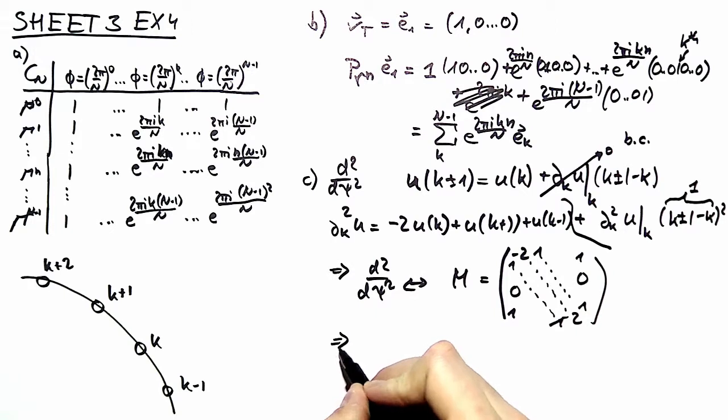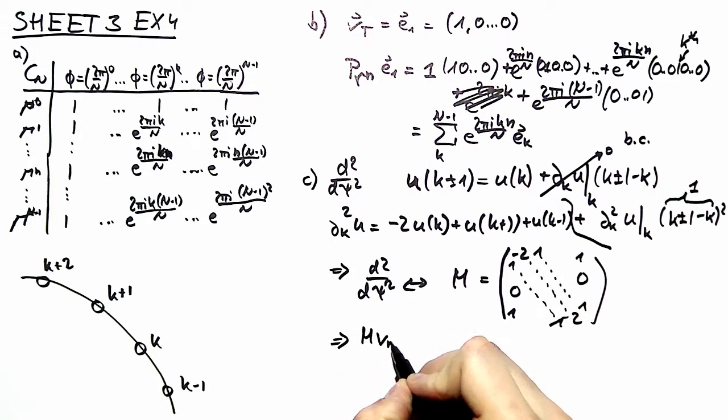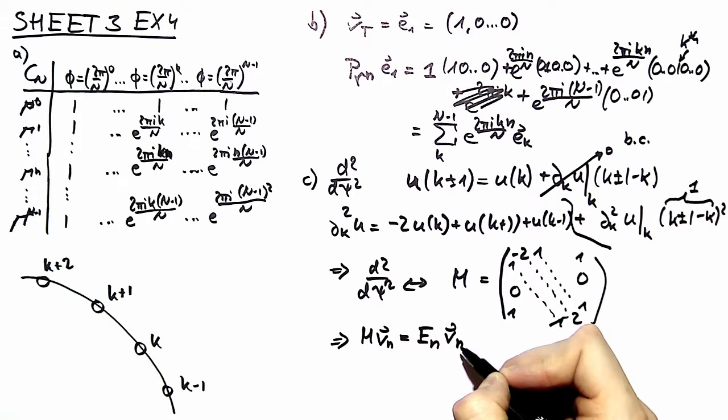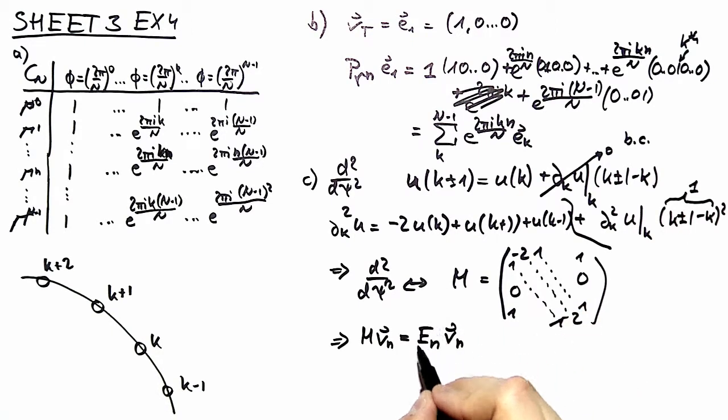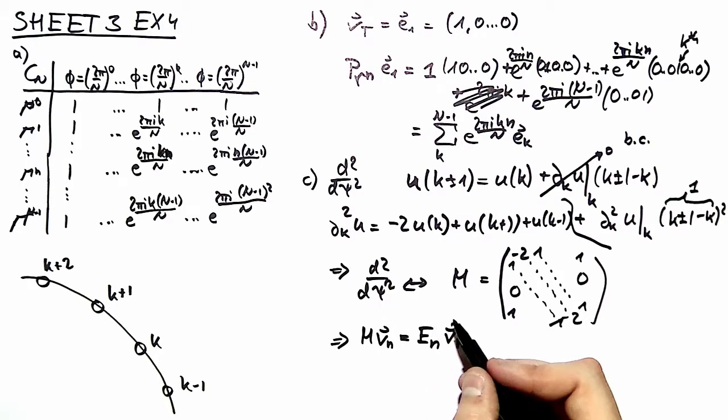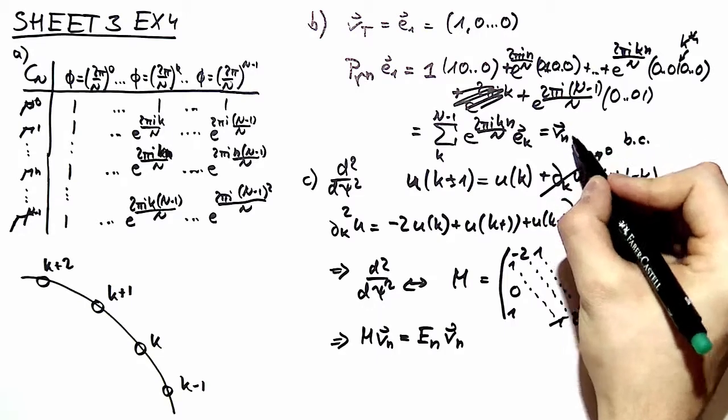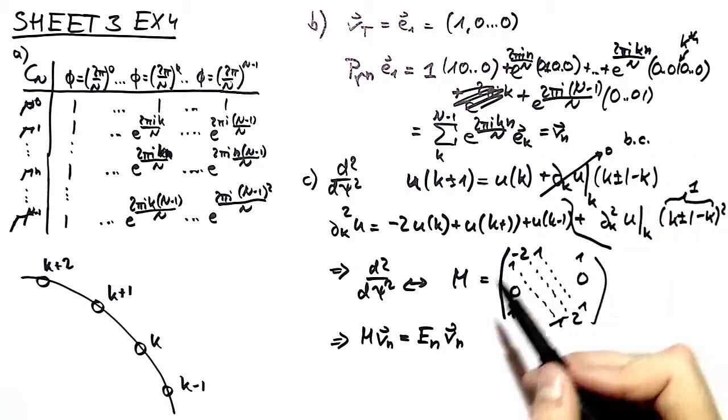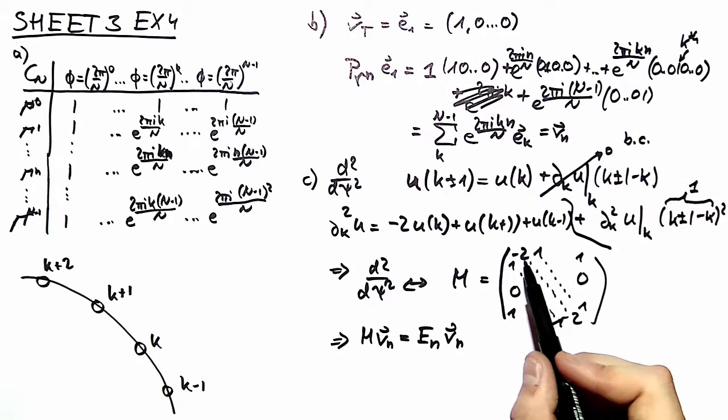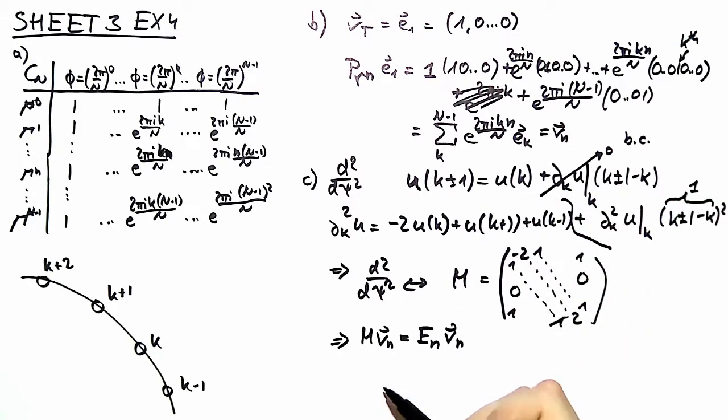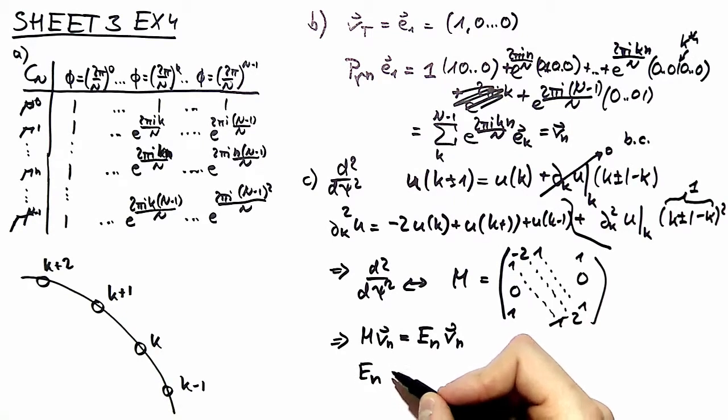We can write down the eigenvalue equation for this matrix. And now we want to compute the eigenvalues, namely the energies. So what do we have? We have our vn's over here and we have our matrix over here. So we act with that matrix on these vn's and then we divide by these vn's again to end up with an energy according to the nth representation.